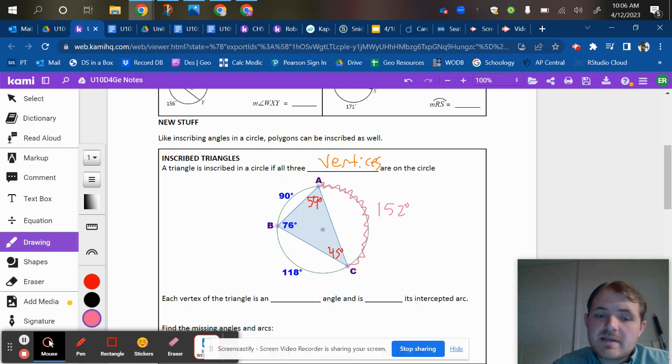So again, just to summarize what we just talked about, each vertex of the triangle is an inscribed angle. And it's one half of the arc that it intersects.